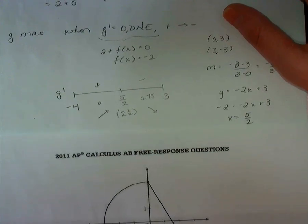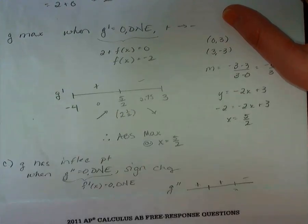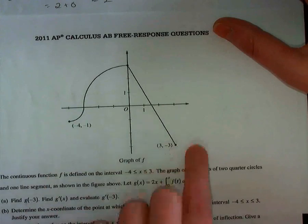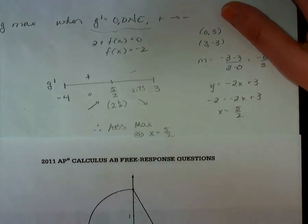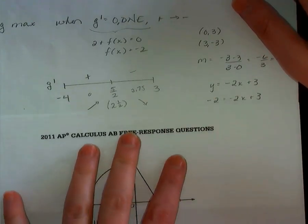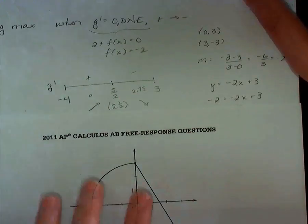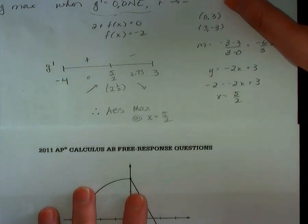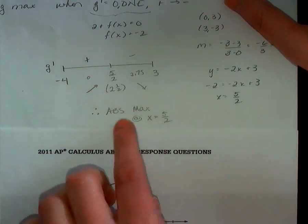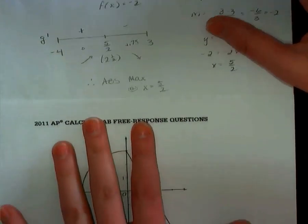Now I need another number. So I'm going to pick 2 and 3 quarters and sub that in. If I look at this, 2 plus, let's see here, if I look at 2 and 3 quarters, I can sub that in for x and I realize that 2 plus that value is going to be negative for me. So there you go. This forces me to have an absolute max at x equals 5 halves.